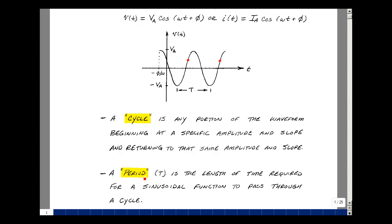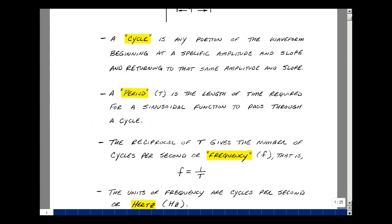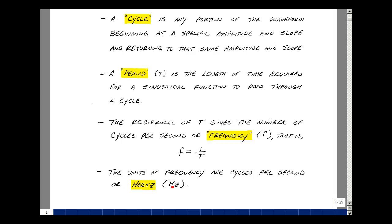A period is the length of time required for a sinusoidal function to pass through a cycle. This would be our period, likewise from going from here to here. The reciprocal of the period gives the number of cycles per second. We also call that frequency, and it's equal to 1 over the period. The units of frequency are cycles per second. It was renamed after Heinrich Hertz, a German physicist, in around 1960, and we just call it Hertz, or HZ for short.